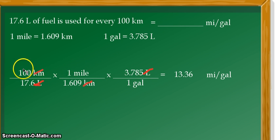So meaning, in 100 kilometers being traveled by the car, for example, that uses up 17.6 liters of fuel, that is equivalent to the fuel efficiency of 13.36 miles per gallon. But wait, that is not yet our final answer because we have to always report with the correct number of significant figures.